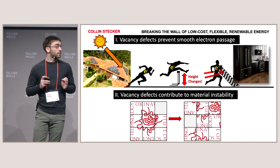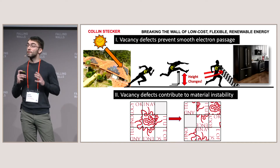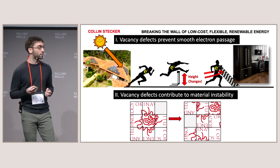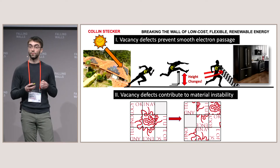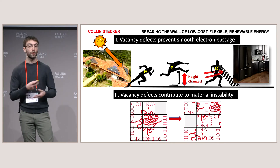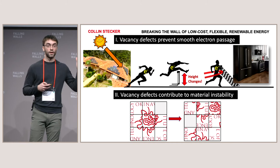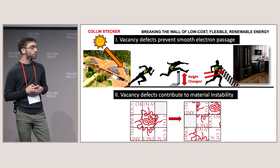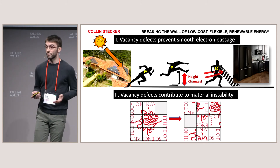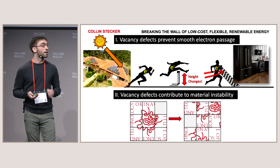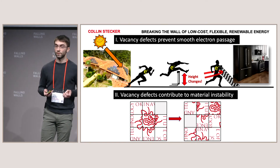The second important consequence that my work found was that these vacancy defects enable other atoms in the material to move around. I imaged atoms moving to and from the surface as well as along the surface. Imagine a sliding picture puzzle but in reverse, going from a completed picture to an absolute mess. In this way, vacancy defects enable material destabilization.